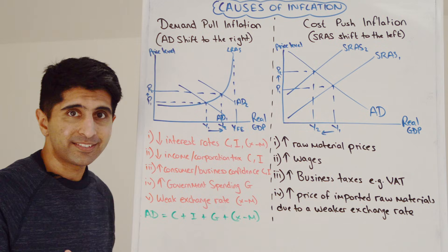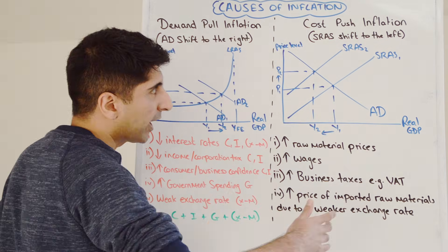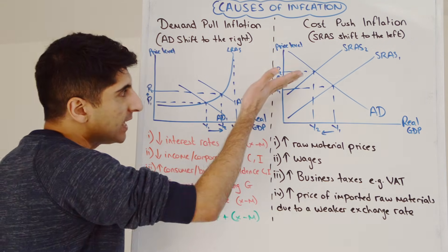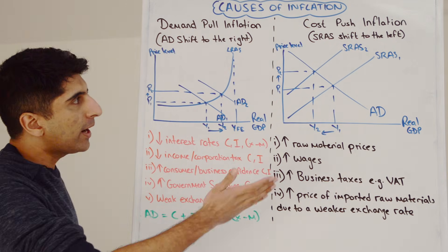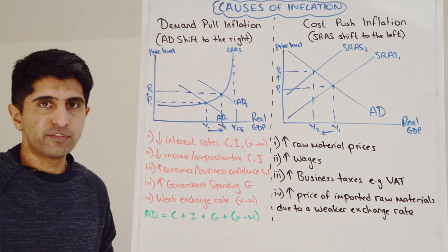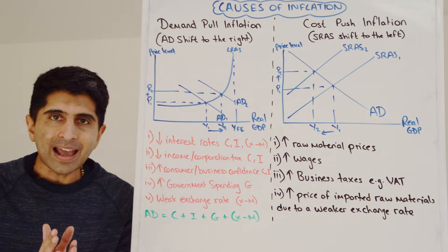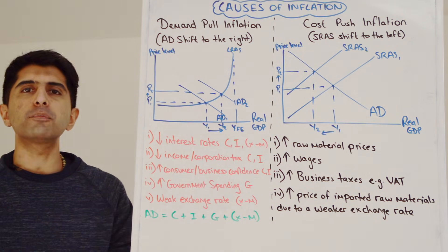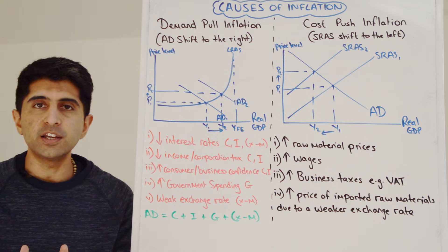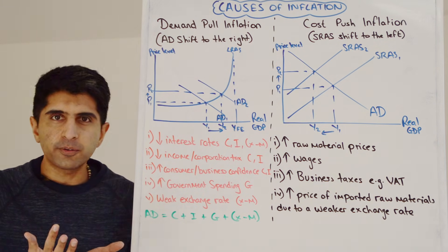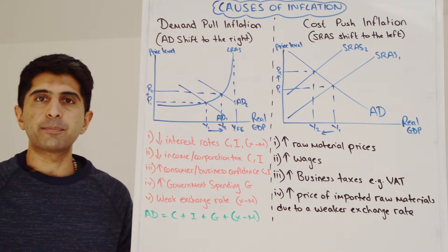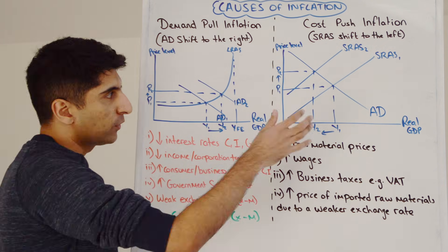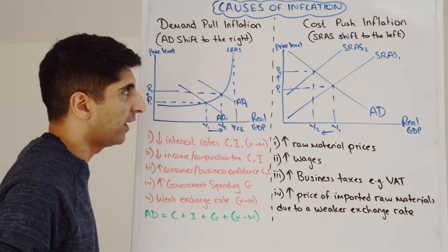What about cost-push inflation? Cost-push inflation happens when SRAS shifts to the left. There's our diagram — a simple shift of SRAS to the left — and we can see the higher cost-push inflation from P1 to P2. But why? When does SRAS shift to the left? When there is an increase in the cost of production for the majority of firms in the economy. If firms are suffering from higher costs of production, they're going to pass on those higher costs to consumers via higher prices of goods and services. Simple as that for cost-push inflation.